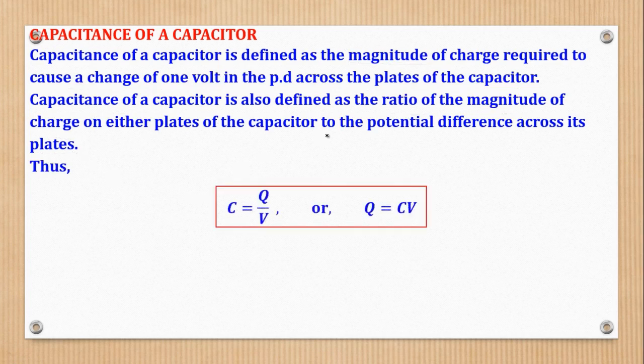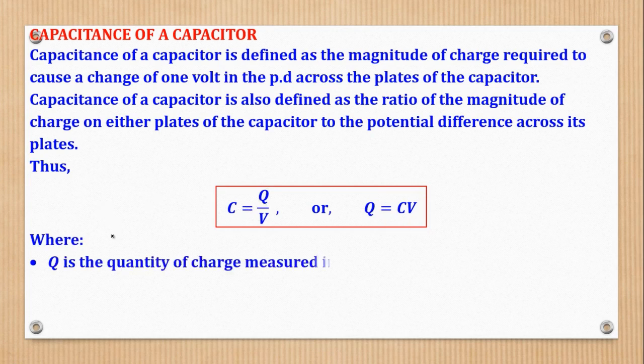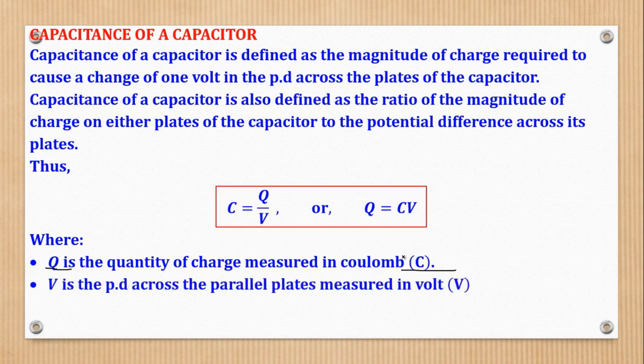Therefore, it implies that because we use the word ratio here, so ratio of charge magnitude of charge to potential difference, so C will be equal to charge over potential difference. If you rearrange by taking this one to this side, I'll come up with Q is equal to CV. So both these will be used more frequently in this video. So here we shall define the symbols. Q is the quantity of charge measured in Coulombs. So that means that if charge is given in microcoulombs, we change it to Coulombs.